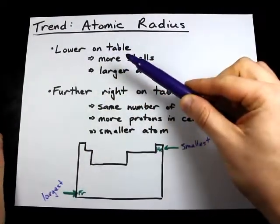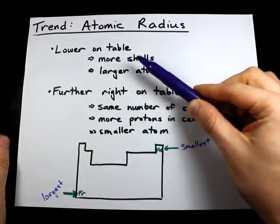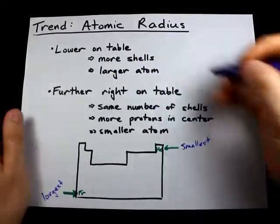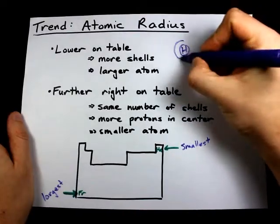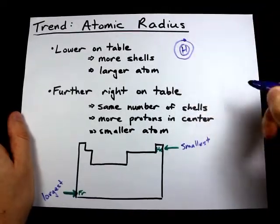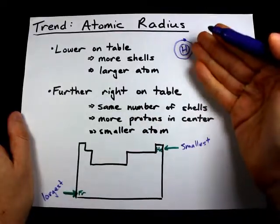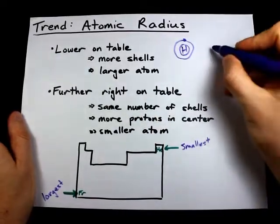The lower an atom is on the periodic table, the more electron shells that atom will have. If you remember, hydrogen has one electron in its outer shell, so it only has one occupied energy level.